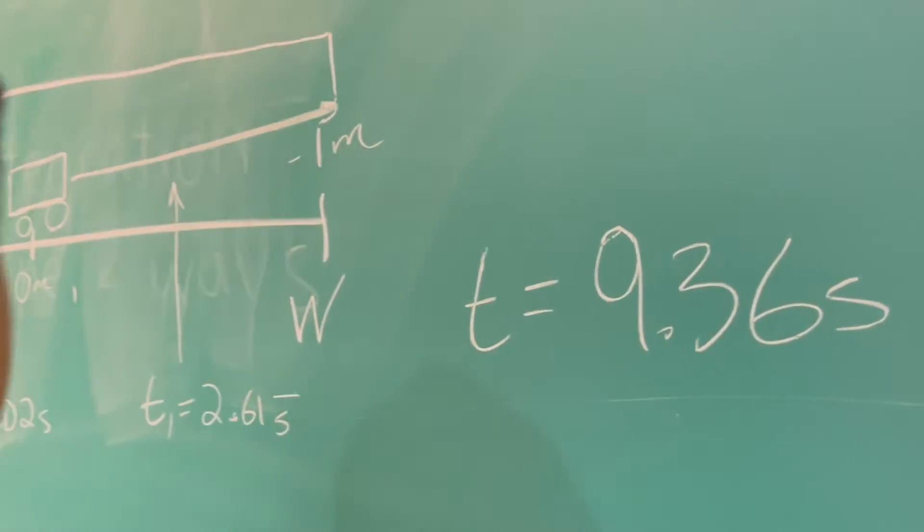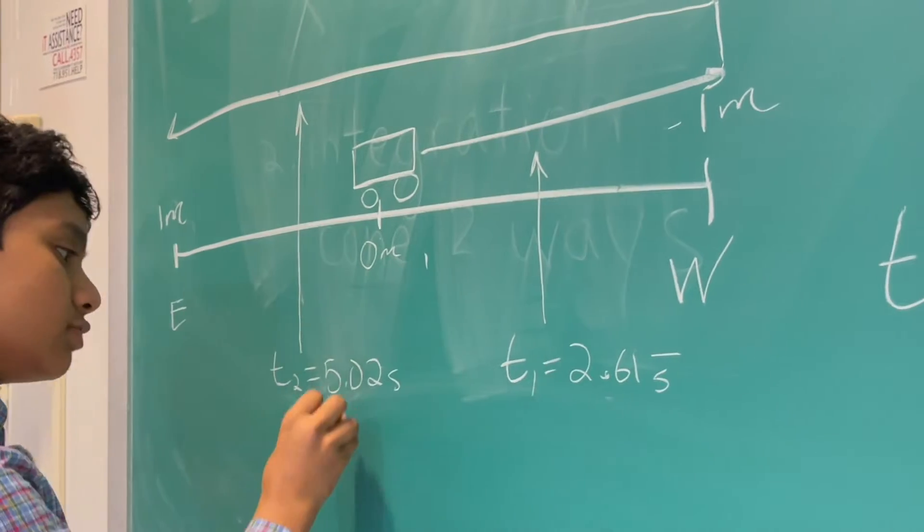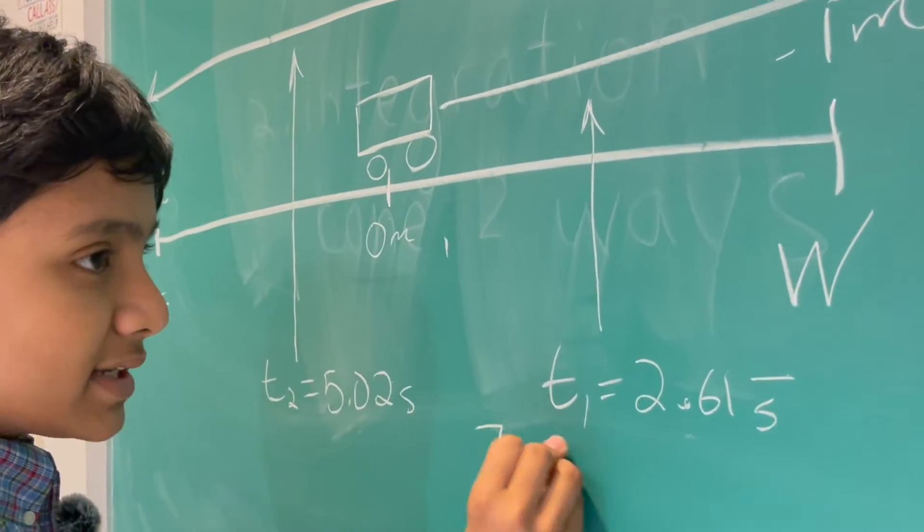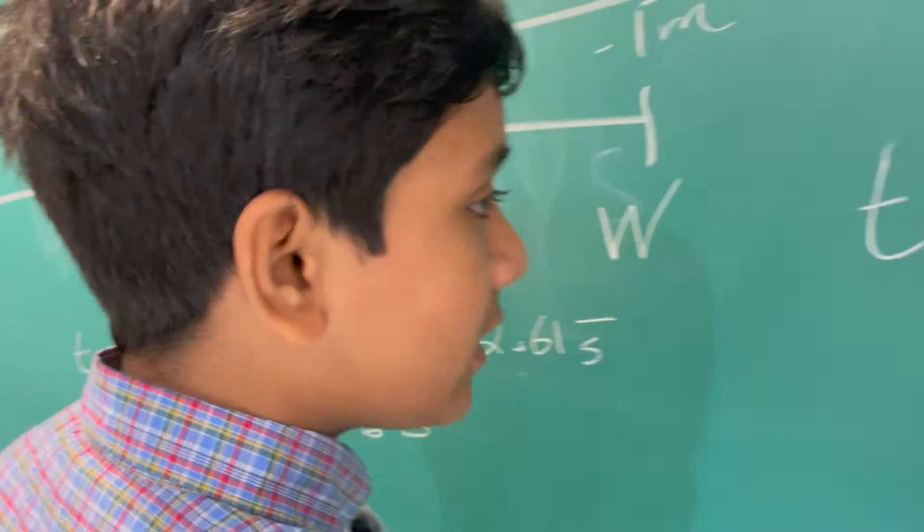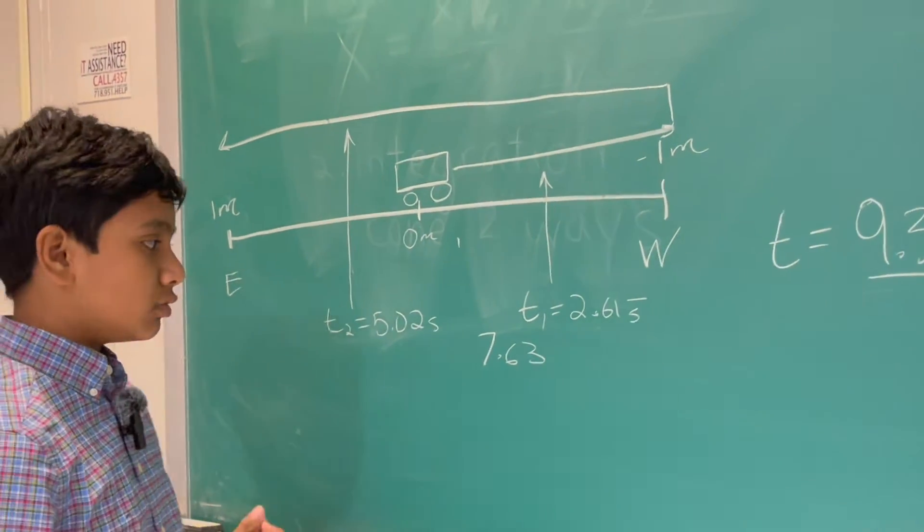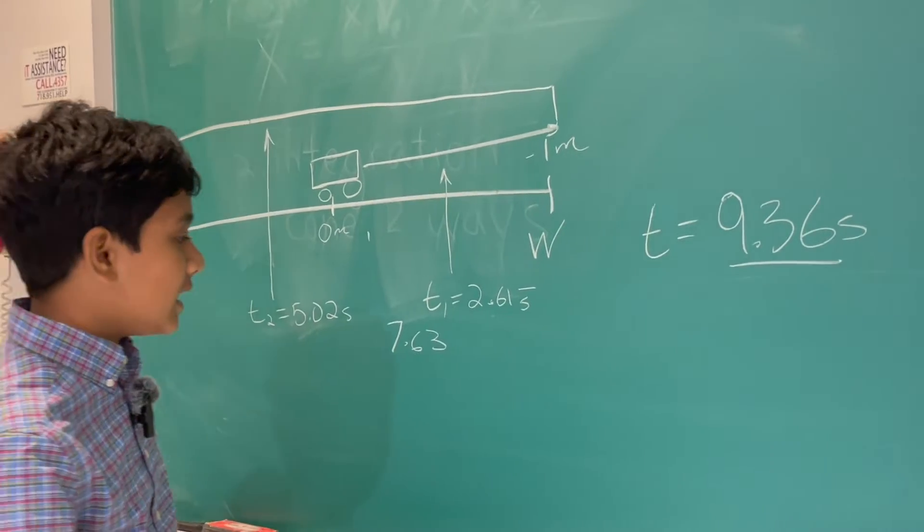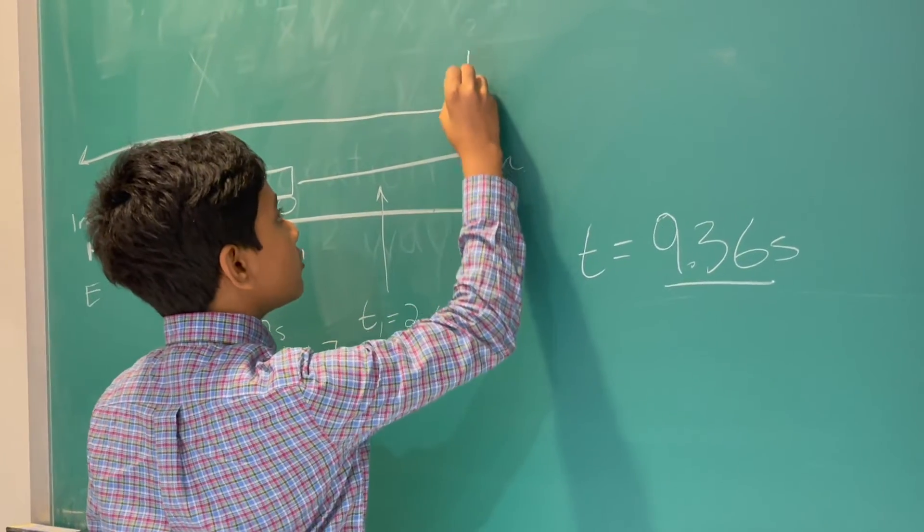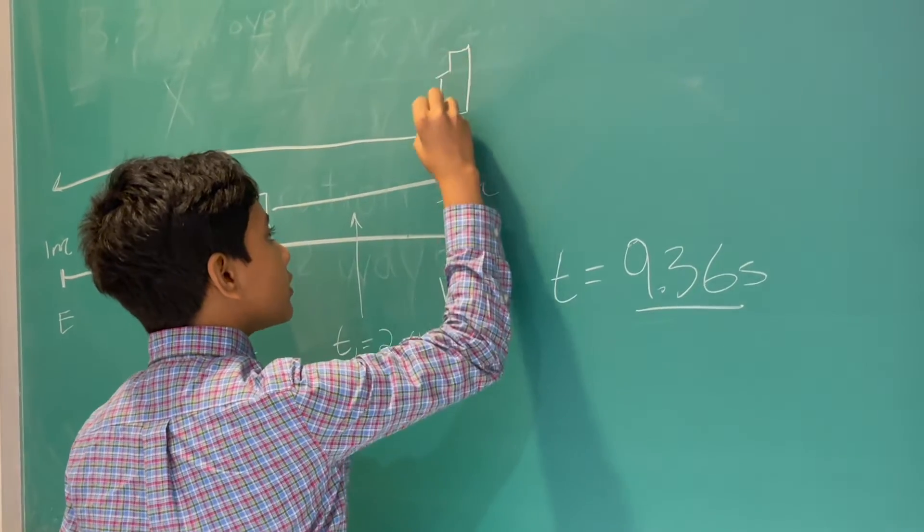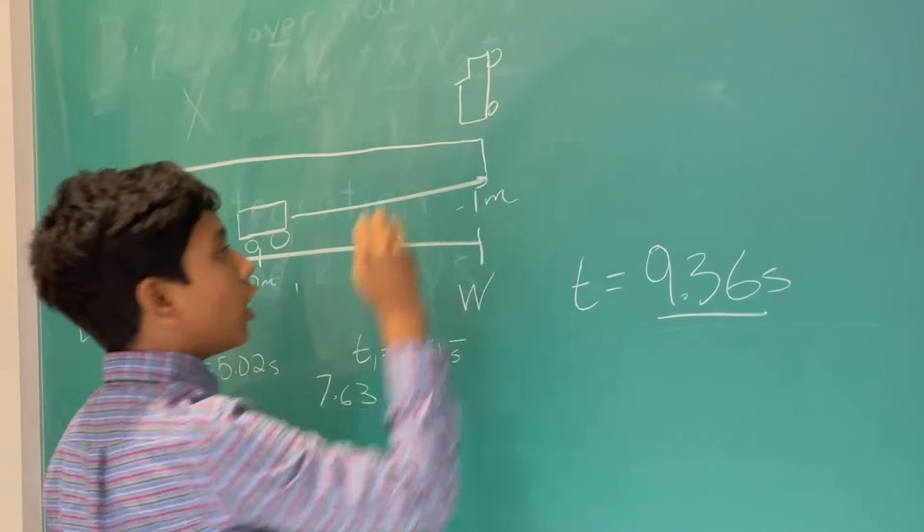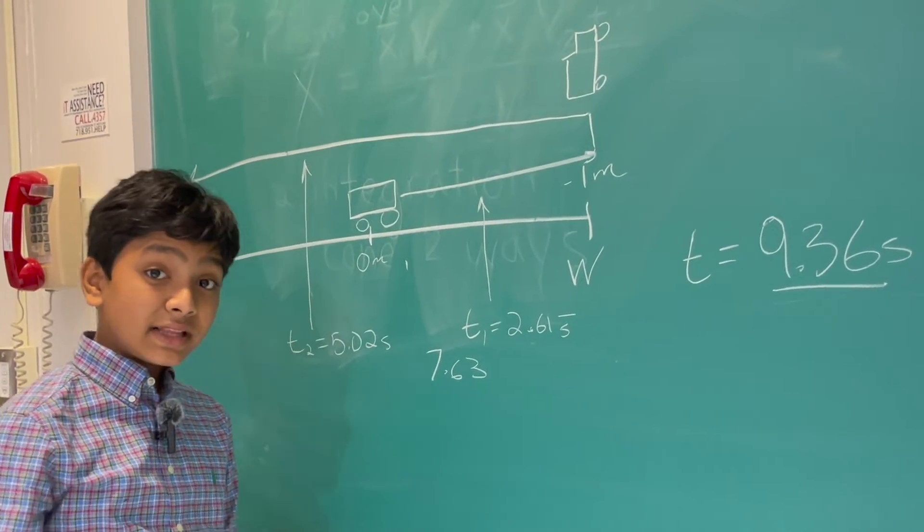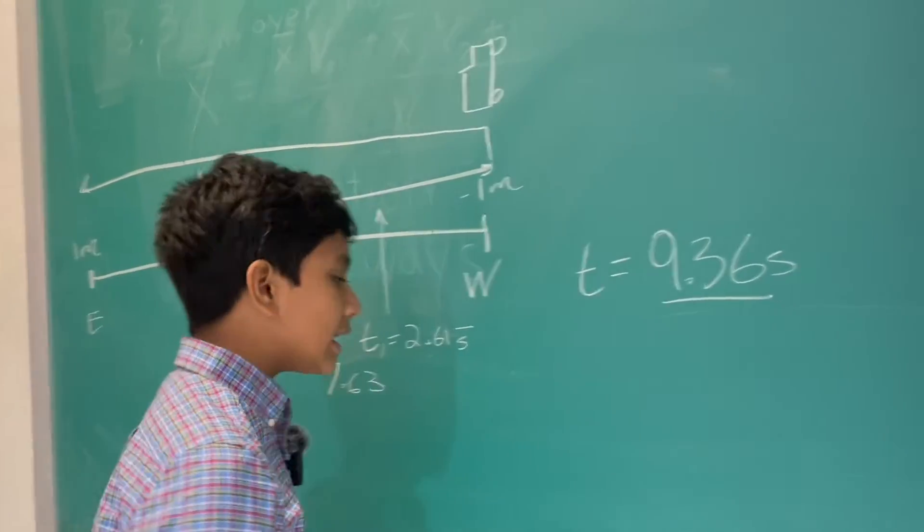Now, you might be saying, but the time to go forward is 2.61 and the time to go back is 5.02. Shouldn't that mean it's 7.63? Where did the extra one and a half seconds go? Well, that's a very good question. And that's because of the flipping time. You see, there's about one and a half seconds where the car is on the wall here, and it had no horizontal velocity. But we still have to count that. So keep that in mind later.